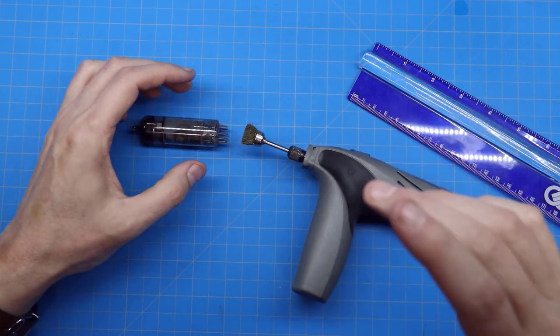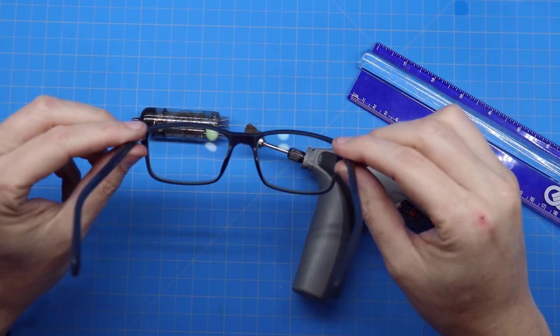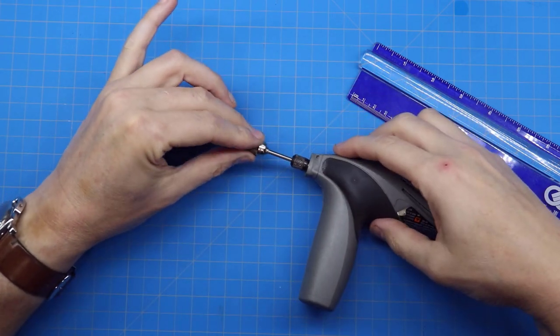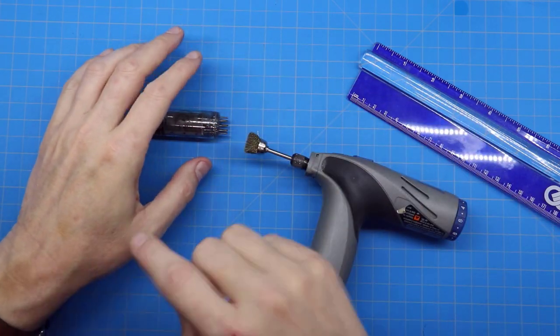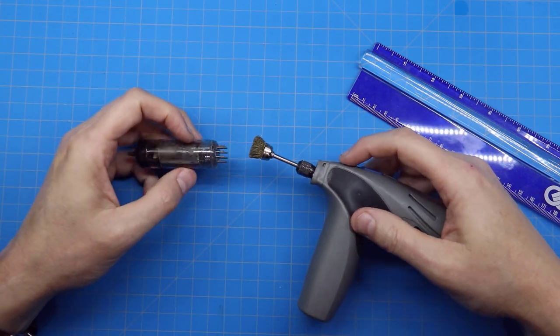Now, like I said, I would wear some eye protection with this. I have no, I wear glasses all the time. But I've never had a bristle fly off and get in my eye. But I have felt them fly off and hit my hand before. So I would pay attention to that and just use some eye protection.